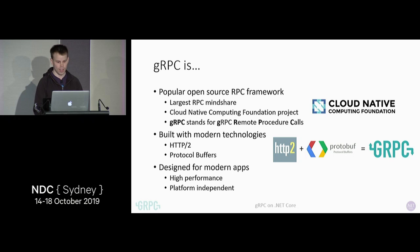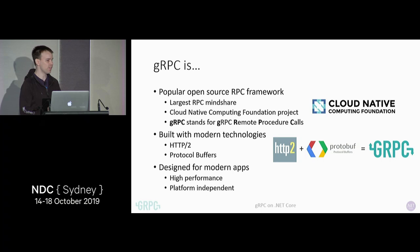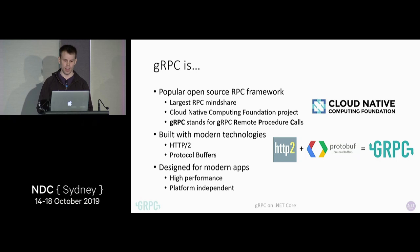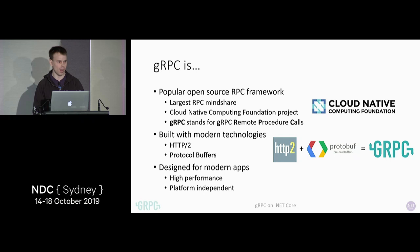gRPC is designed for modern applications. It's high performance — it uses a binary protocol in HTTP/2, and protobuf is also binary, creating very small, very fast messages. It's quite easy to create real-time services using gRPC. And gRPC is platform independent — it's now supported well in .NET Core, but also in Node, Java, Ruby, C++, Python, Go, Rust — pretty much anything you can think of.